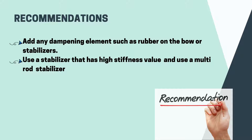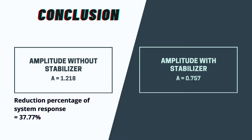Our recommendations on how to improve vibration reduction on the bow system are: first, to add dampening elements such as rubber, which has high dampening properties — this can be placed on the bow or on the stabilizer. Second, use a stabilizer with high stiffness by manipulating the material and diameter of the stabilizer. We can also use a multi-rod stabilizer to further increase stiffness and dampening values to reduce vibration of the system.